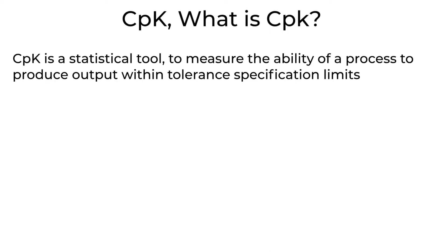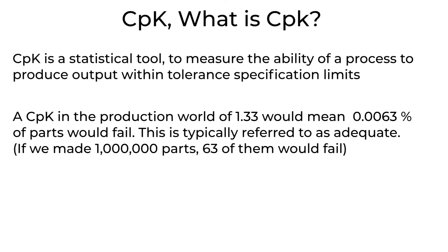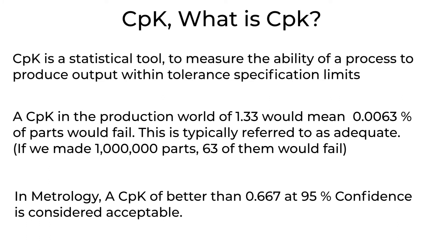What is CPK? CPK is a statistical tool to measure the ability of a process to produce output within tolerance specification limits. A CPK in the production world of 1.33 would mean 0.0063% of parts would fail — this is typically referred to as adequate. In metrology, a CPK of better than 0.667 at 95% confidence is considered acceptable.